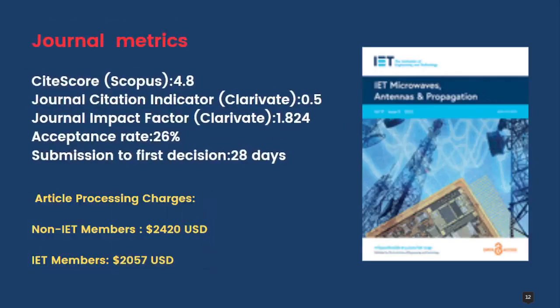Looking at journal metrics, the CiteScore from Scopus is 4.8. Journal Citation Indicator from Web of Science (Clarivate) is 0.5, and the Journal Impact Factor from Clarivate is 1.824. Acceptance rate is 26%. Submission to first decision is 28 days. Since this is an open access journal, it has article processing charges: 2,420 US dollars for non-IET members and 2,057 US dollars for IET members.